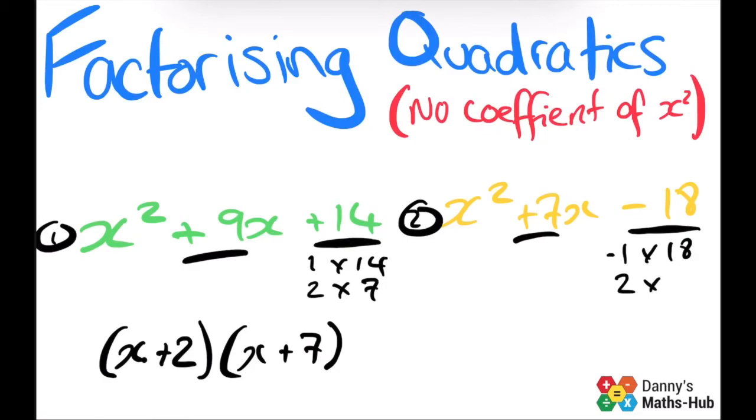Then we've got 2 times 9, that gives us positive 18. So if we have a minus 2 and plus 9, that does give us positive 7. So that's what goes in our brackets.